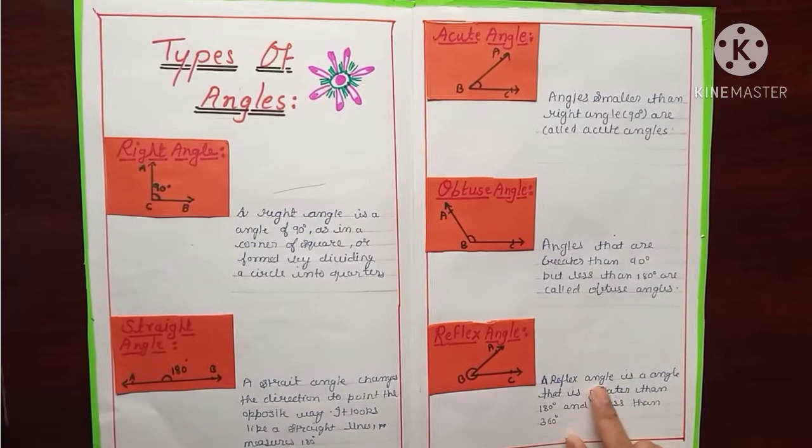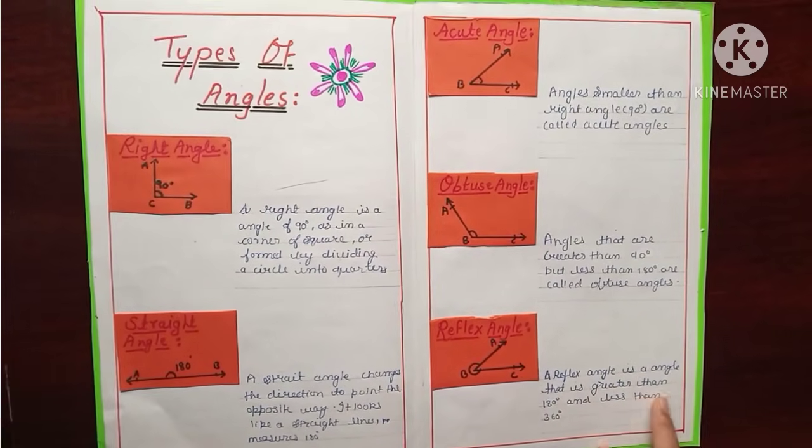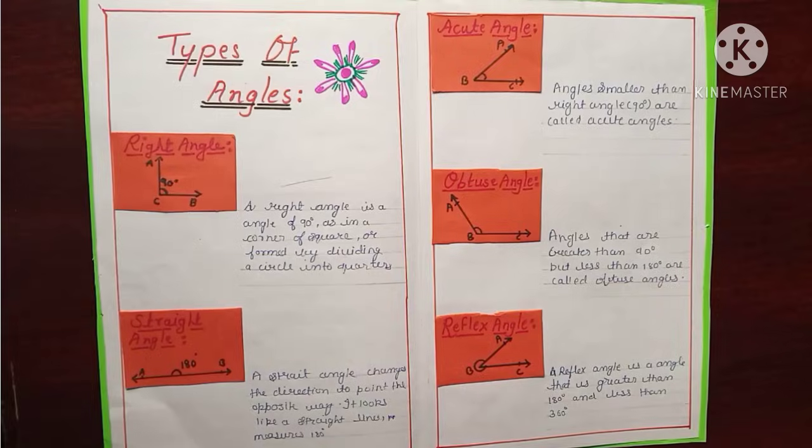And reflex angle here is the definition. A reflex angle is angle that is greater than 180 and is less than 360 degree.